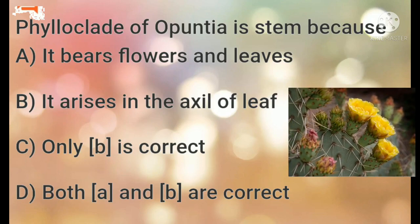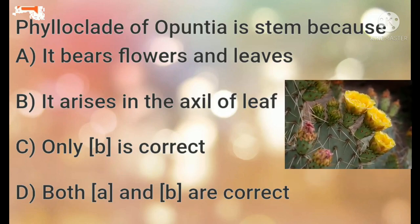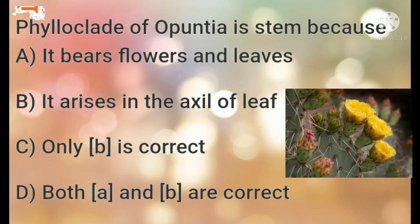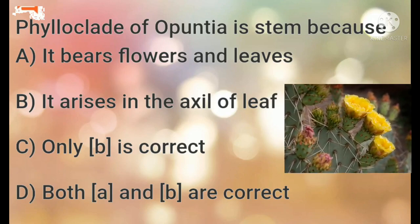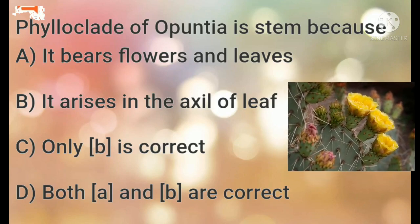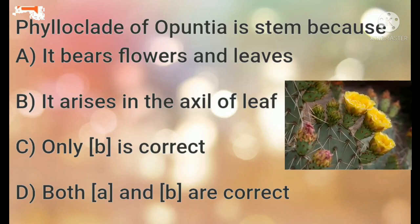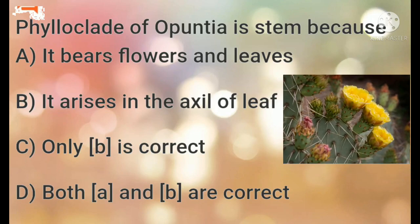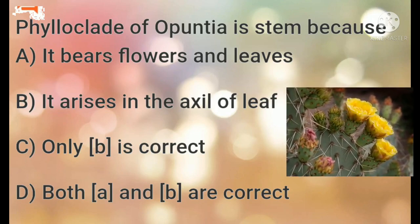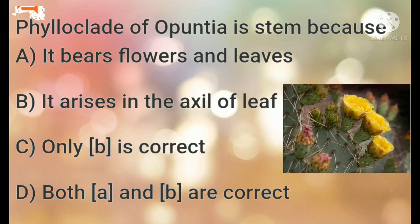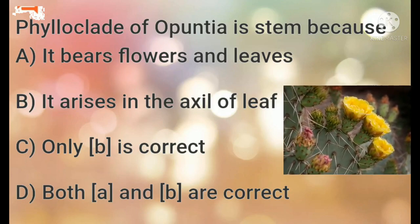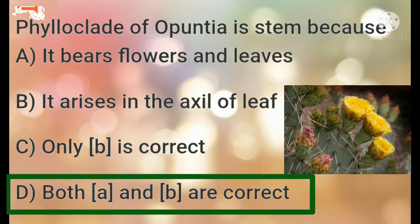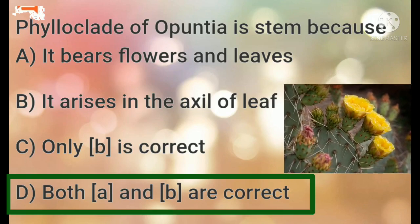The phyloclade arises from the axil of a leaf, and at the base of the spine, new stems arise. Both reason A (it bears flowers and leaves) and reason B (it arises in the axil of a leaf) are correct. Therefore, the right answer is option D — both A and B are correct. Flowers and leaves arise from it, and branches arise from the axil of the spine.